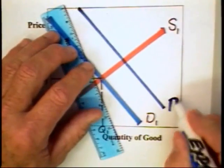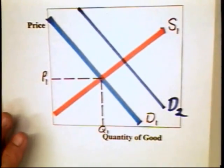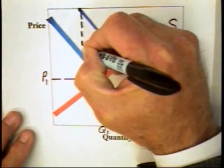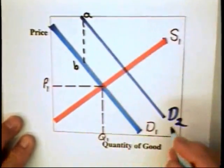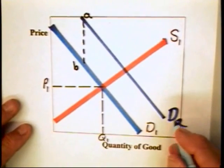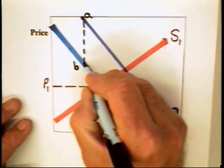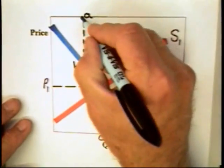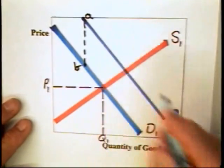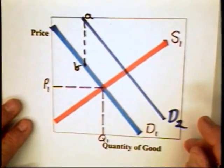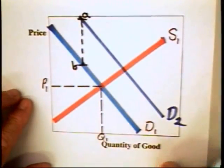Let's suppose that the true demand curve for the good, which captures all benefits, is equal to D2. This vertical distance here — the distance between A and B — represents the value to people who are not actually buying the bumpers. When I go to buy my bumpers, I consider my value, which is B. I can't consider the value to other people; at least I cannot charge them for it. And as a consequence, my demand for the good can be understated simply because I cannot charge others for the benefits that they receive from what I do.